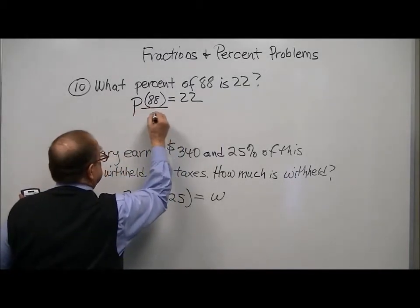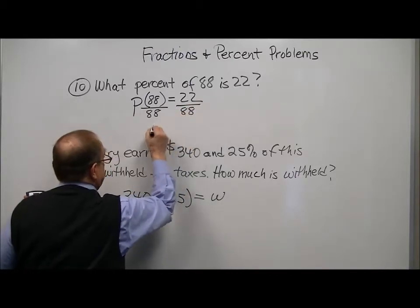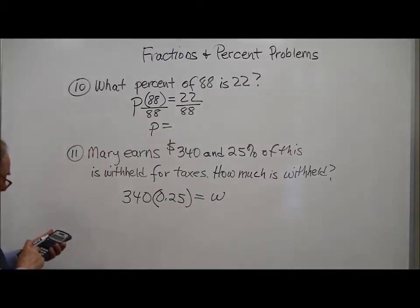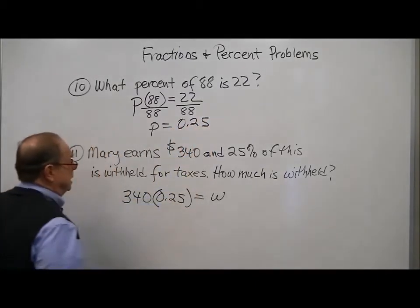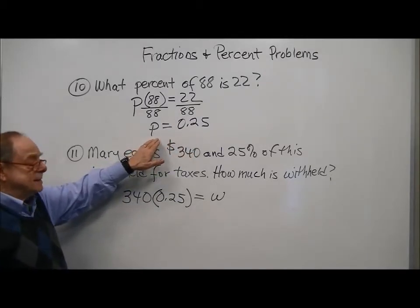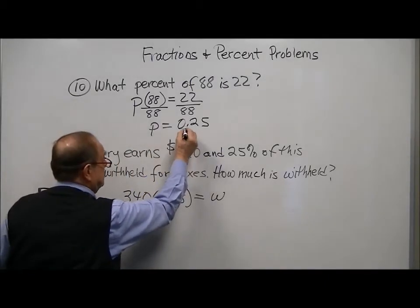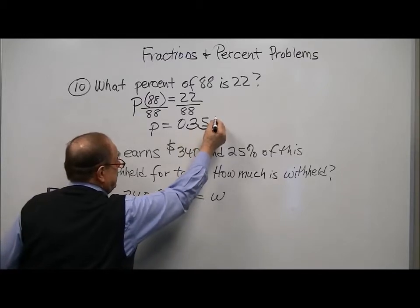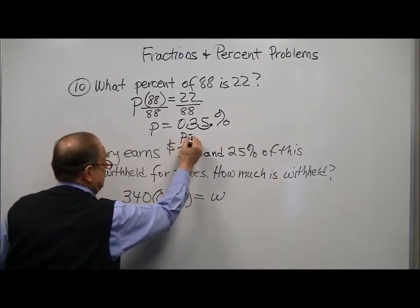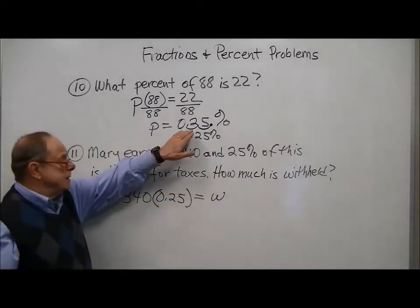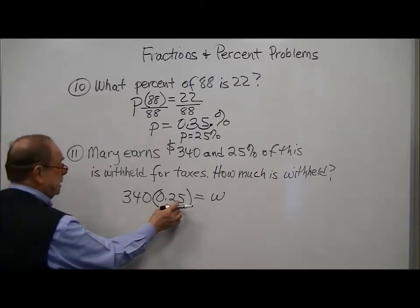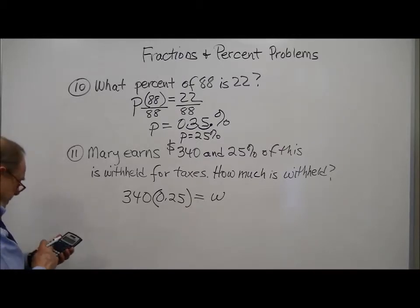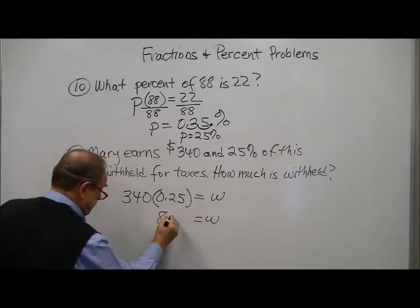So to solve this, we're just going to divide both sides by 88. And we get p equals 22 divided by 88, comes out as 0.25. Again, this is a decimal fraction and they're looking for percent. So we have to convert this to a percent by moving the decimal place over two places to the right and adding a percent sign. So our answer is 25%. Again, it comes out as a decimal fraction from the calculation, but then you have to convert it to a percent. And for this, we're just going to take 25% of this, and the amount withheld is $85.